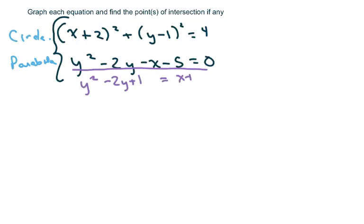I'm going to go ahead and move this over and I'm adding the 1 to both sides. So add 1 so you can get y minus 1 squared equals x plus 6.